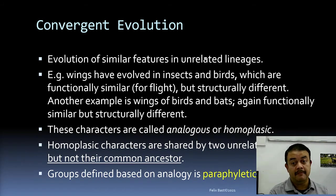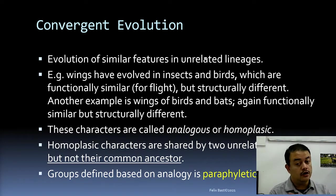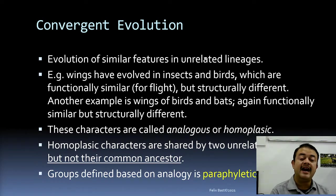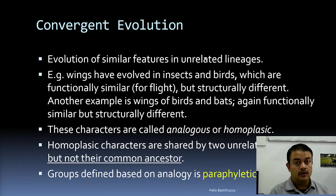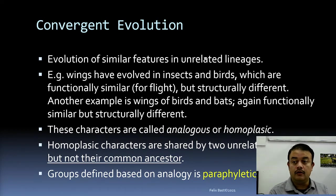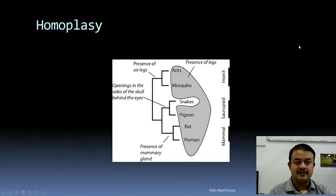Homoplastic characters are shared by two unrelated groups but not by the common ancestor. A group defined based on analogy is known as a paraphyletic group, not a monophyletic group. If you define a group based on analogous structures or homoplastic sequences, it is called a paraphyletic group.